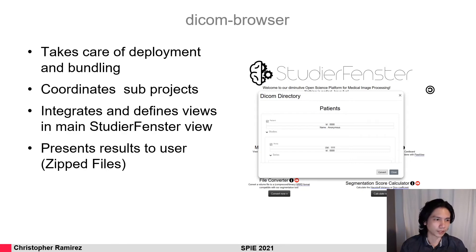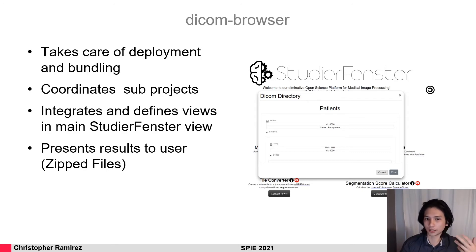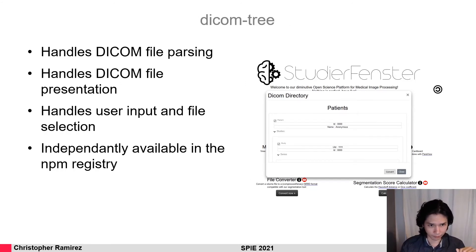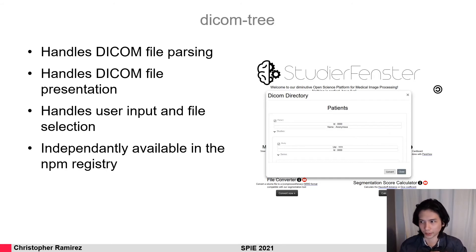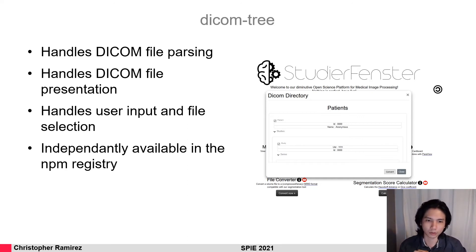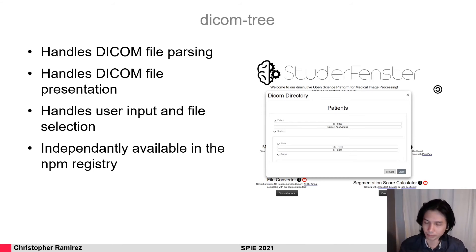The DICOM browser also presents the results as a zip file when conversion is done and shows progress when there are multiple files being processed. The DICOM tree part is the content of the contained window showing the DICOM directory — it takes care of reading the DICOM data filesets, grouping them together, handling the input file selection, and identifying which datasets we are interested in. The DICOM tree itself is independently available in the NPM registry, so this part can be implemented in any web application independently of Studio Fenster.